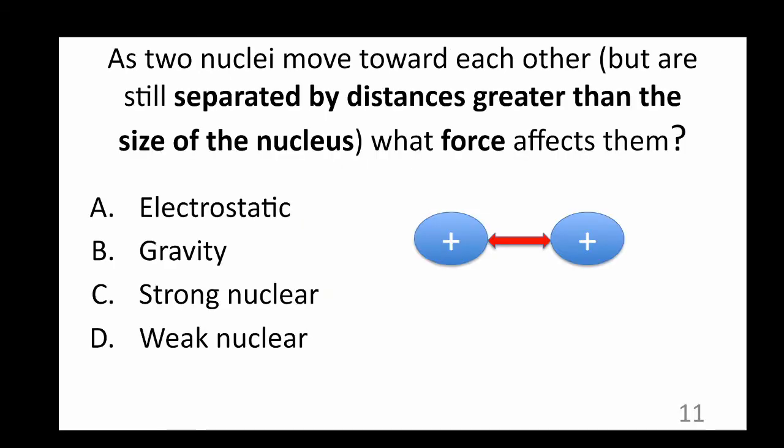To understand nuclear reactions, let's think about what happens as two nuclei that do not have electrons approach one another. As the nuclei move together, but are still at distances greater than the size of the nucleus apart from one another, what forces act on them? The answer here is A, an electrostatic force. This is repulsive, in this case since both nuclei would have a positive charge.